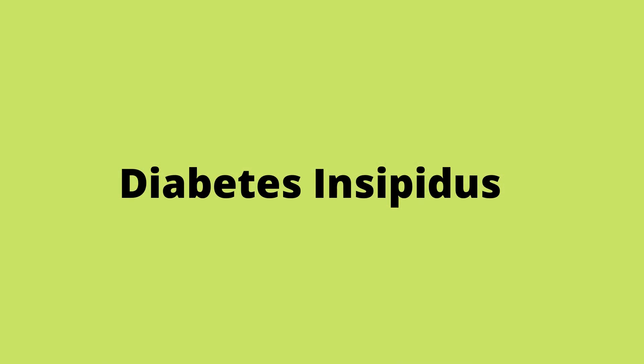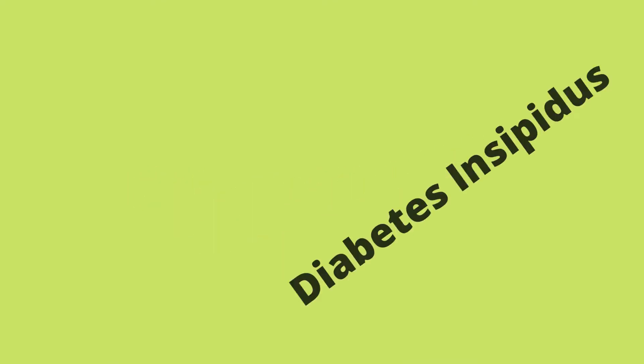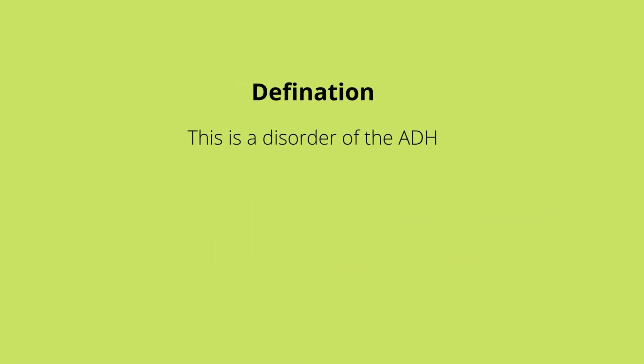In this video we're going to talk about diabetes insipidus. Diabetes insipidus is a disorder that has to do with ADH. ADH is released from the posterior pituitary gland in response to low blood volume, low blood pressure, hypernatremia which is elevated levels of sodium, and elevated blood osmolarity.